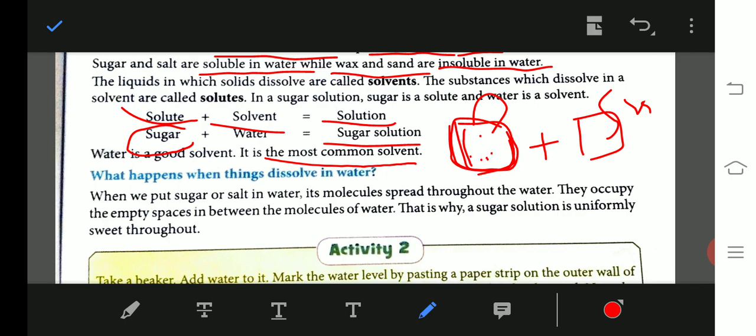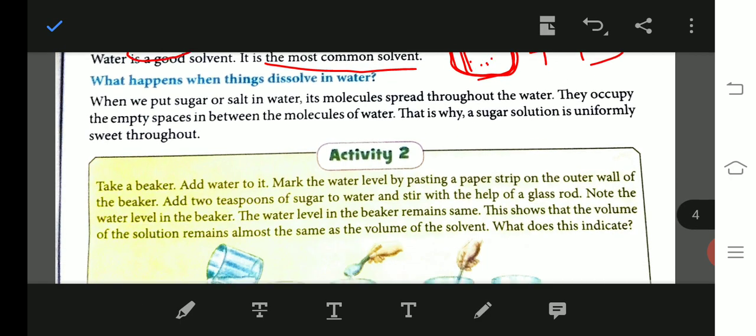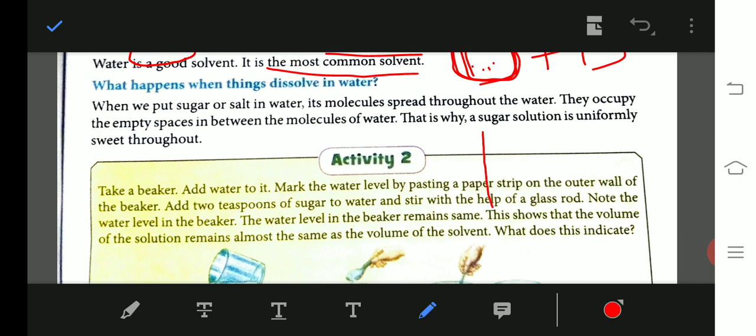What happens when things dissolve in water? When substances go into water, what happens? When we put sugar or salt in water, its molecules spread throughout the water, and they occupy the empty space. That is why the sugar solution is uniformly sweet throughout.